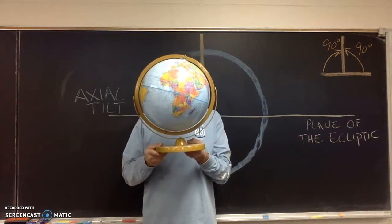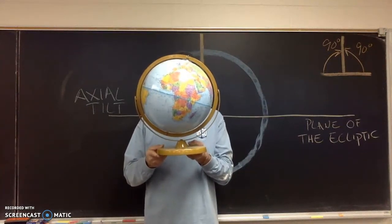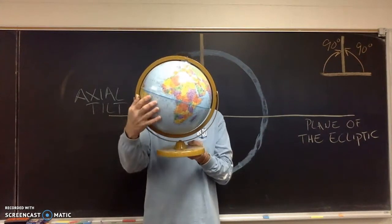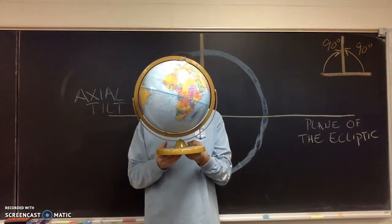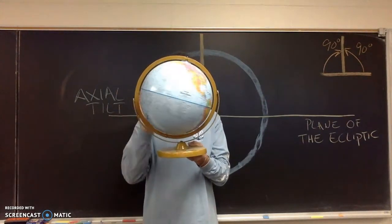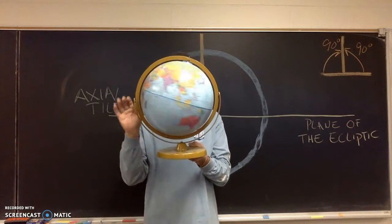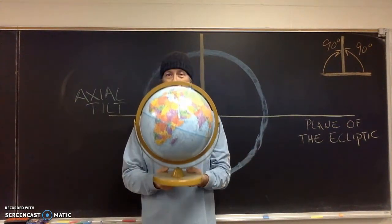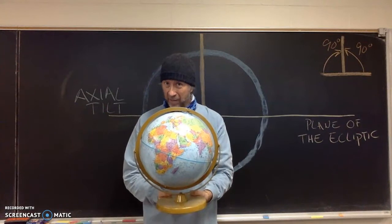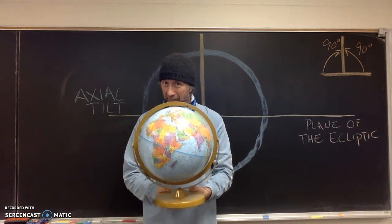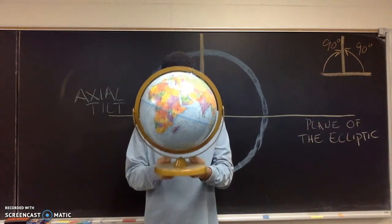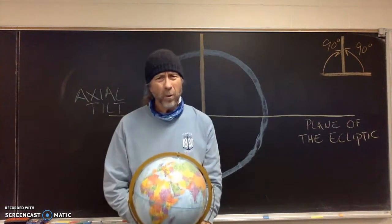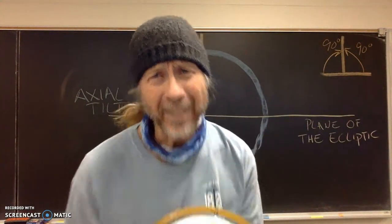Have you ever noticed when the earth is mounted — a globe like this is mounted like this one is? Remember we rotate west to east. Have you ever noticed that the axis is tilted? Think about it. It is. Why would they do that?